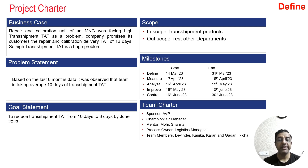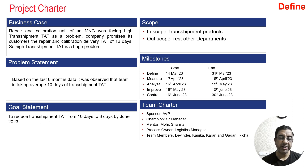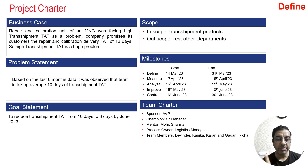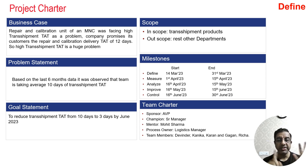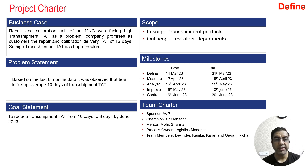The first thing the team did was to create the project charter. The project charter has six elements: number one is business case, number two is problem statement, number three is goal statement, number four is scope of the project, number five is milestones, and number six is team charter. When they looked at the data for the last six months, they observed that the average turnaround time for transshipment is 10 days.